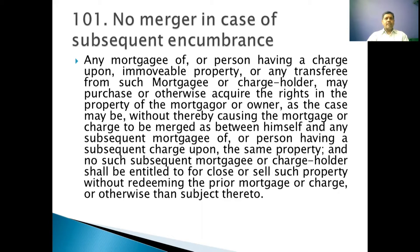This section has to be read in consonance with Section 100, which I have put in the description box for your convenience. This section speaks about a day-to-day life situation. Any person who purchases a property would definitely like the property to be free from encumbrance. The word encumbrance refers to a property which is free from burden or impediment — no person would like the property to be encumbered, having some kind of charge, burden, or impediment on the property. That is what Section 101 speaks about.